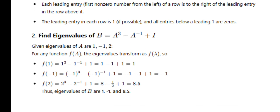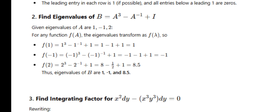Second question: find the eigenvalues of B = A³ - A⁻¹ + I, given that eigenvalues of A are 1, -1, 2. Simply substitute 1, -1, and 2 into the expression. f(1): 1³ - 1⁻¹ + 1 = 1 - 1 + 1 = 1. f(-1): (-1)³ - (-1)⁻¹ + 1 = -1 + 1 + 1 = 1 — wait, total is -1. f(2): 8 - (1/2) + 1 = 8.5. Therefore eigenvalues of B are 1, -1, and 8.5.